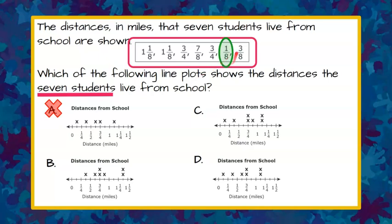So if my smallest piece of data or distance that a student lives from school is one over eight, one-eighth, B should have a plot right here. And there is no X on this so therefore we can rule out choice B because the smallest piece of data is not on that line plot.